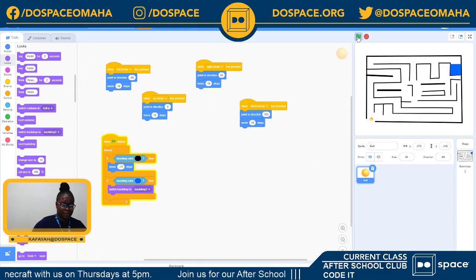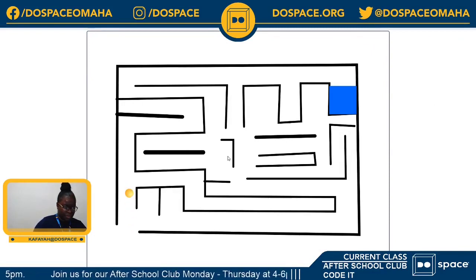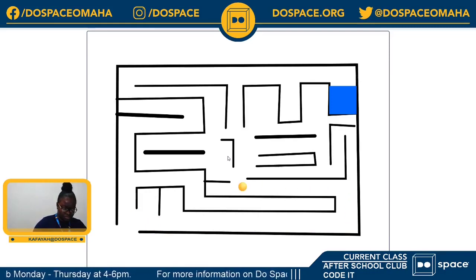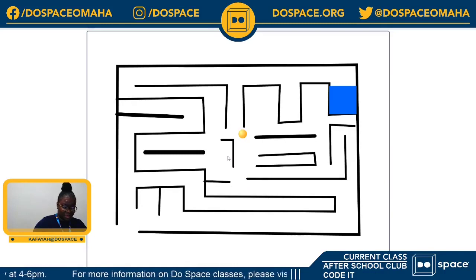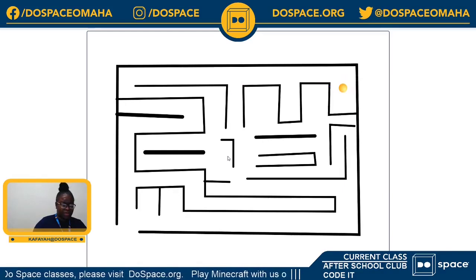Let's test that out now. My ball is navigating through the maze — going back when it hits a wall, carefully moving through. Once it reaches the blue box, the backdrop switches and the blue box disappears. We know that our maze worked.